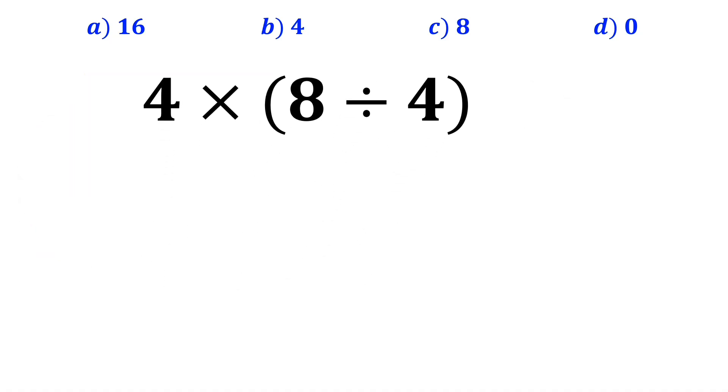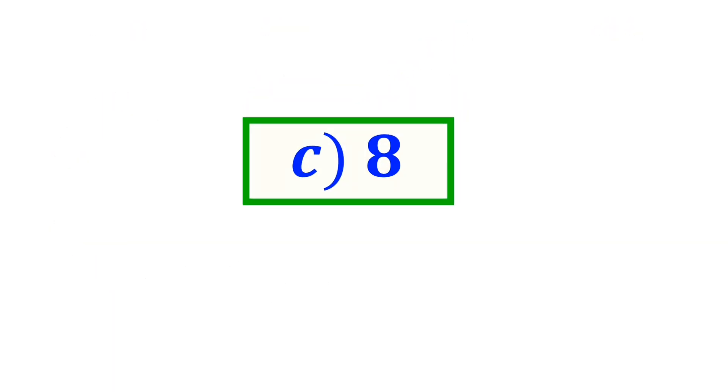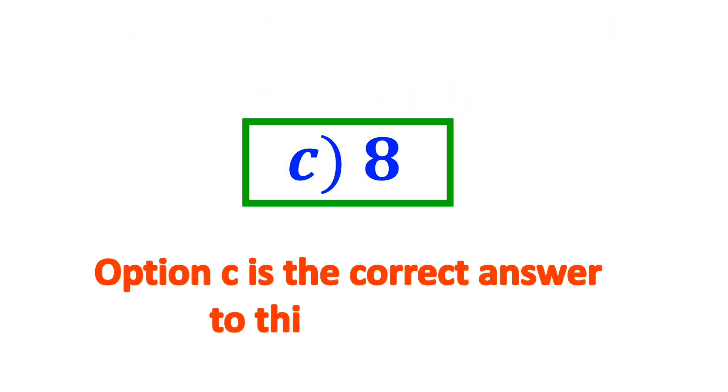In the next step, they go straight to the expression inside the parenthesis and divide 8 by 4. So it becomes 4 times 2, which equals 8, and immediately they say that option C is the correct answer to this question.